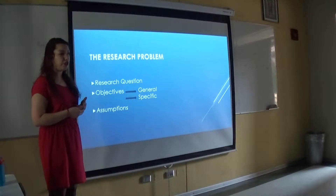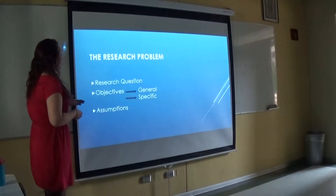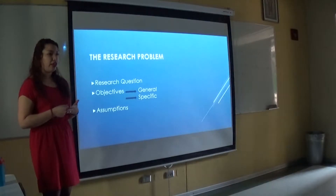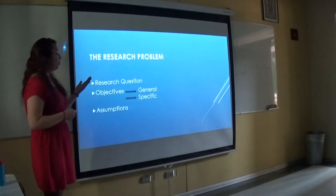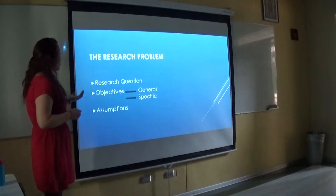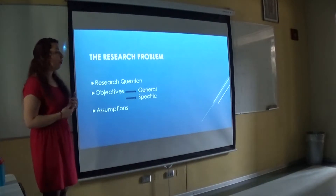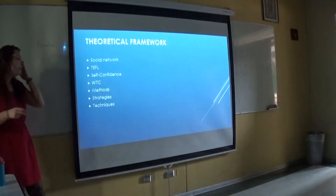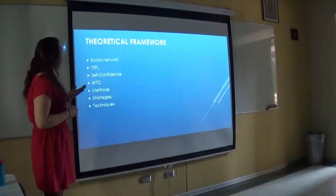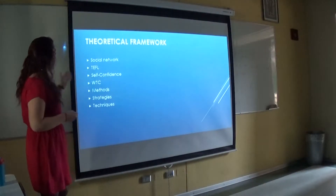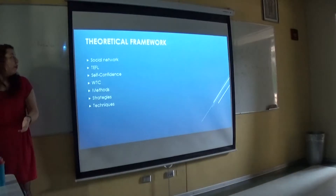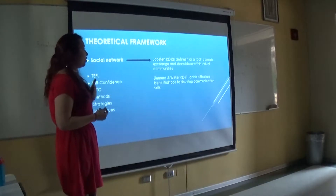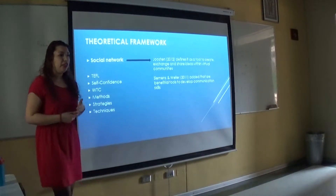In order to address this, we created a general objective and specific objectives. The general objective was to determine how social networks make students improve their willingness to communicate. From this, specific objectives emerged: to identify students' needs, interests, and proficiency; to identify an action plan to improve students' willingness to communicate; and to analyze whether this action plan provoked an effect on students' willingness to communicate.